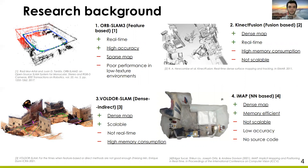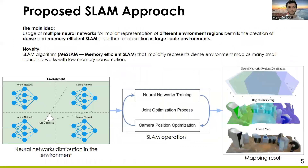iMAP SLAM is a novel approach that uses a neural network to implicitly represent the environment. Due to the implicit map representation, it produces dense maps with low memory consumption. However, it is able to work only in small environments. In our work, we proposed the MISLAM approach. Its main idea is the use of multiple neural networks to achieve scalability. Each neural network represents the region assigned to it. The novelty is the memory-efficient algorithm that achieves scalable dense mapping with low memory consumption.